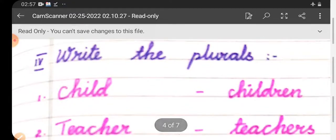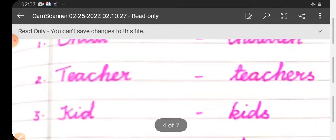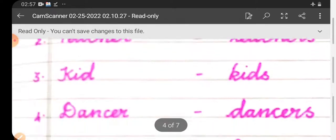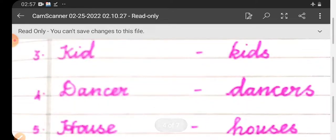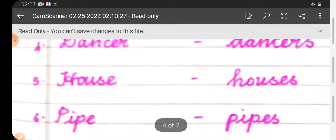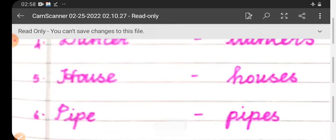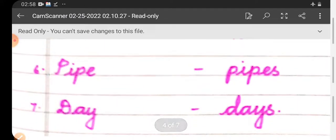Then roman letter four, write the plurals. First one, child - children. Second one, teacher - teachers. Third one, kid - kids. Fourth one, dancer - dancers. Fifth one, house - houses. Sixth one, pipe - pipes. Seventh one, day - days.